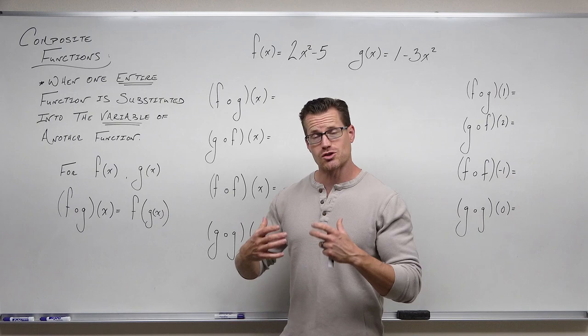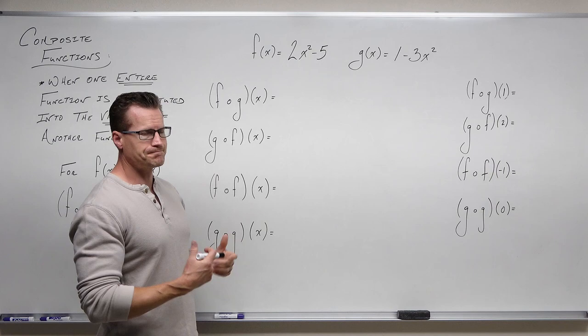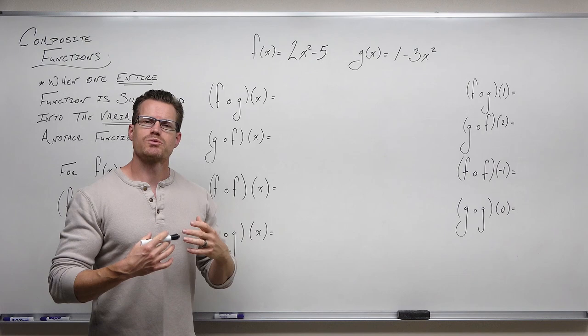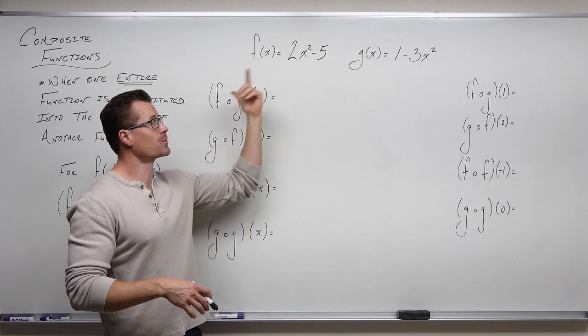I'll give you the Leonard technique on how you do composition of functions. You all know Taylor Swift is really good at math — at least her songs reference that — so we're going to talk about the blank space. As far as composite functions go, that's the best way to think about them. Suppose we have two functions f and g: 2x squared minus 5 and 1 minus 3x squared, respectively. Here's what a composite function asks you to do: look at the first function, which is what you're composing upon.